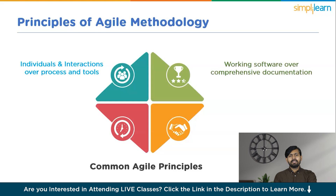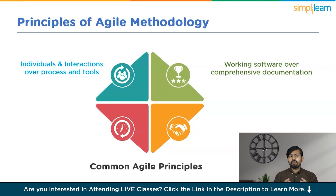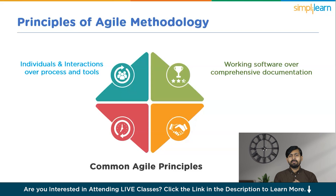The next principle is working software over comprehensive documentation. While documentation is important, Agile prioritizes the delivery of functional software. It emphasizes the value of tangible outcomes over extensive documentation, ensuring that the software meets the needs of stakeholders.